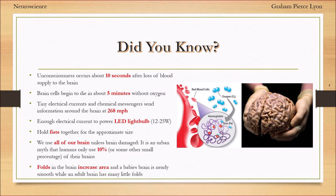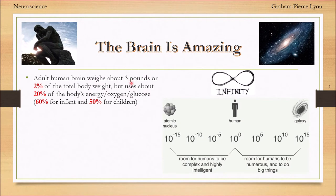If you hold your fists together, it's the approximate size of your brain. We use all of our brain unless it's damaged. There's an argument to be made that we might not be using our full capacity at any given point in time. The folds in our brain increase the area of the brain, and babies have smoother brains than adults.